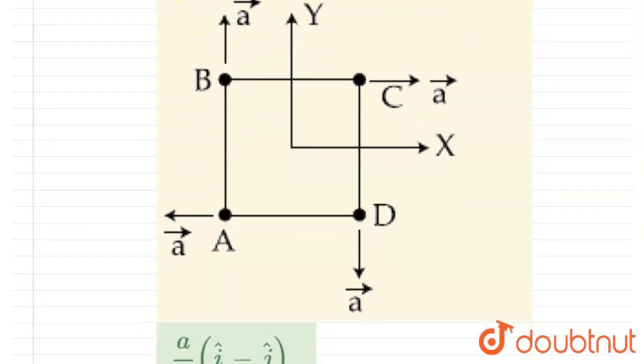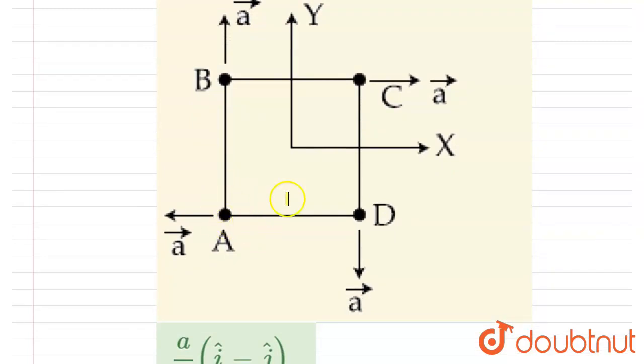So you can see the diagram. You can also see the acceleration directions, right? The direction of acceleration of A is towards left, B is upward, and so on. So we know that acceleration of the center of mass is defined as...